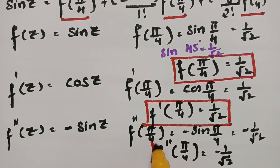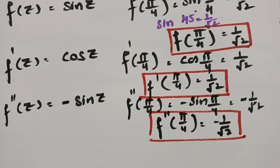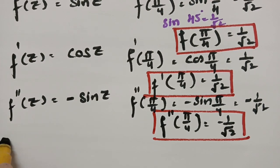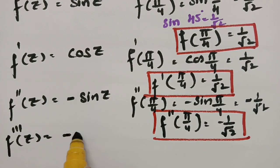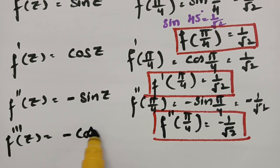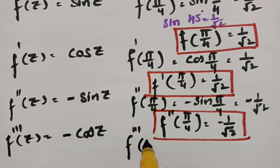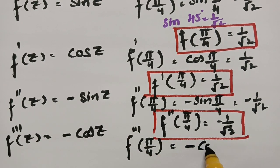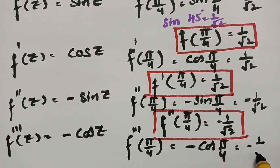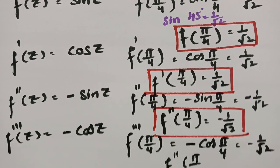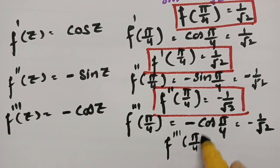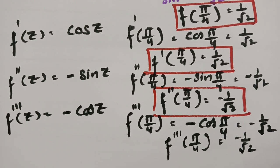Next we need f'''(π/4). Taking the derivative of −sin(z) gives −cos(z), so f'''(π/4) = −cos(π/4). Since cos(π/4) = 1/√2, we get f'''(π/4) = −1/√2.